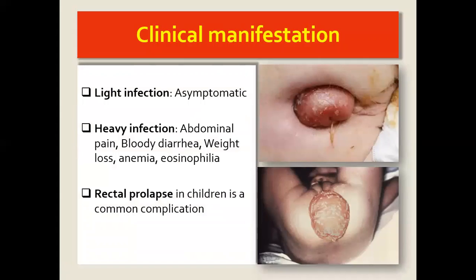Clinically, we have light infestation and heavy infestation. Light infection is usually asymptomatic. But when the infestation is heavy, we have abdominal pain, bloody diarrhea — because the worm attaches to the mucosa of the large intestines — weight loss, anemia, and eosinophilia. The irritation also causes a constant urge to pass stool, and this can lead to rectal prolapse, especially in children.